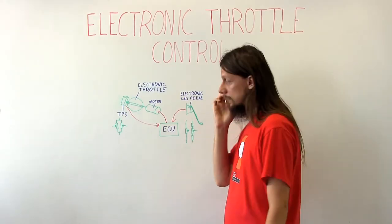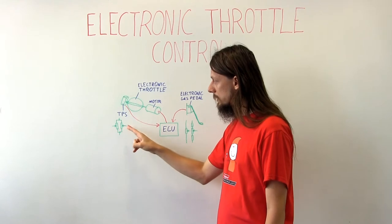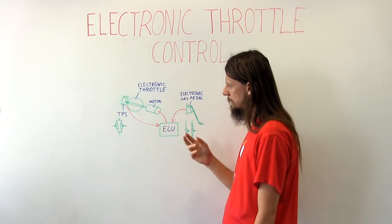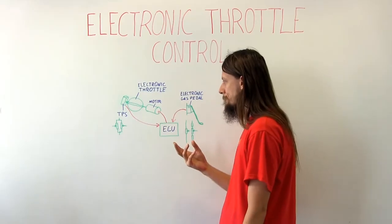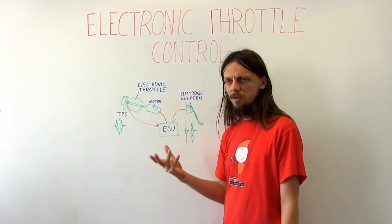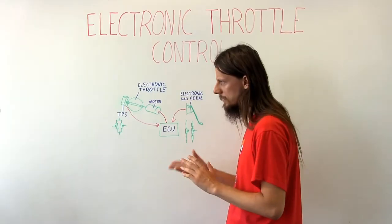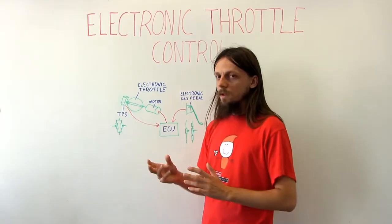One more difference here is that the throttle position sensor will now have two potentiometers, and so will the gas pedal. This is needed for redundancy. Different ECUs from different car manufacturers will act in a bit different way here, but they will all have some precautions or some special mechanism.